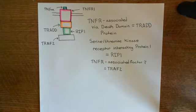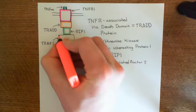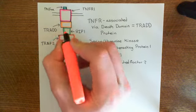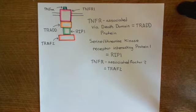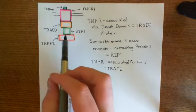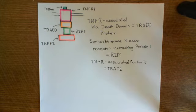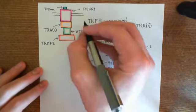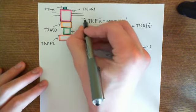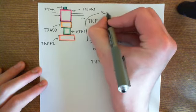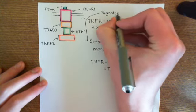This entire complex — the activated TNFR-1 bound to TRADD, which is bound to RIP1, which is in turn bound to TRAF2 — is known as the signalosome.